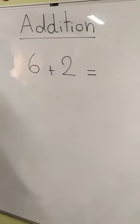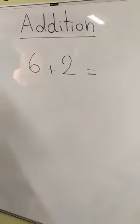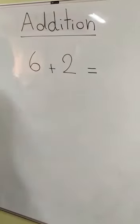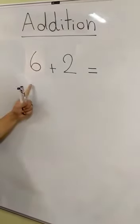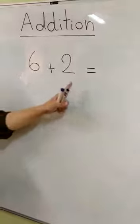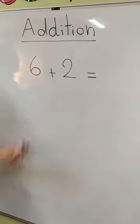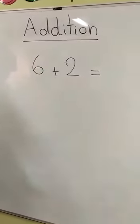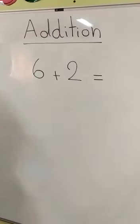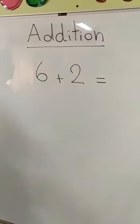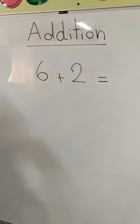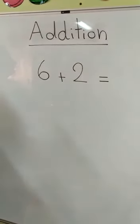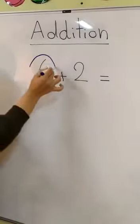Hello everybody, today we're going to recap on addition, but first we need to revise the rules. Six plus two equals — what sign is it? Plus! And as we said before, plus means more. So I'm going to circle the bigger number. Let's circle the bigger number — where is the bigger number here? Six!